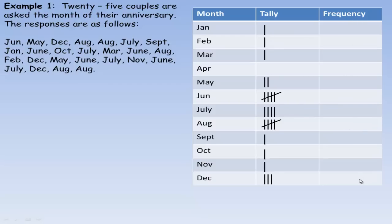Now this last column is the frequency part. Frequency means how many of each. We count: there's one January, one February, and one March. There were no anniversaries in April, so we put a zero there. Two in May, five in June, four in July, five in August, and then one in each of the next three months, and then three in December. That's the beginning of organizing data into a frequency table.